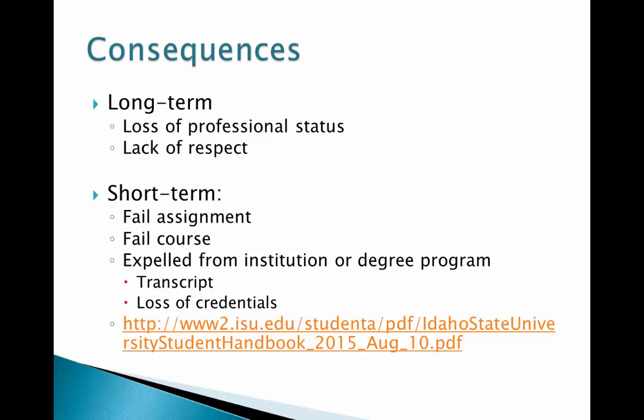However, when inaccuracies and lack of citation information occur more than once, more severe consequences are warranted, and often the student is expelled from the institution or degree program if it is a repeat offense. The guidelines for dealing with any form of academic dishonesty are in the ISU Student Handbook at this link, beginning on page 36.